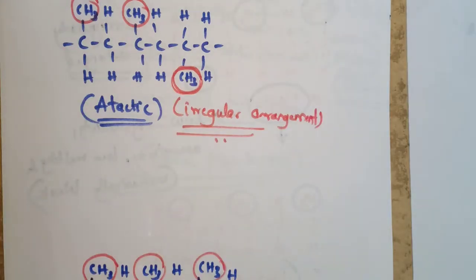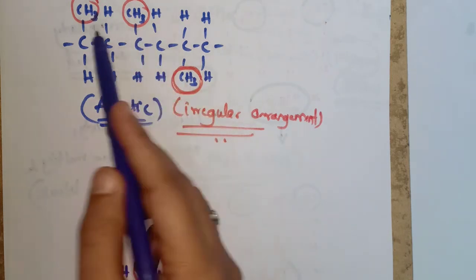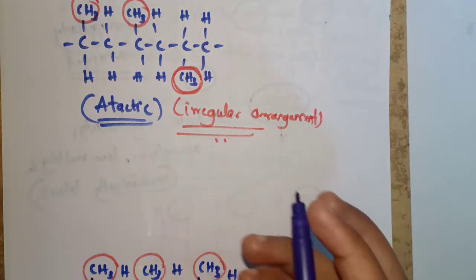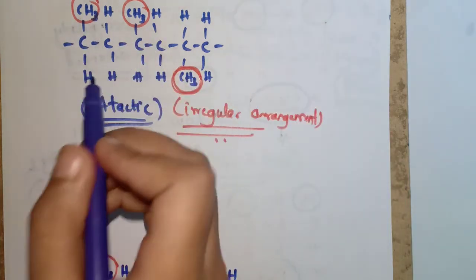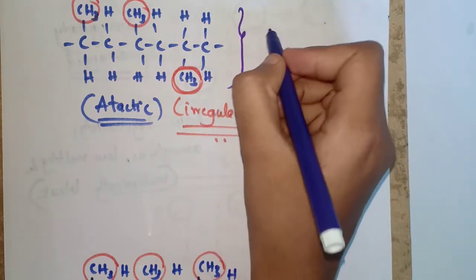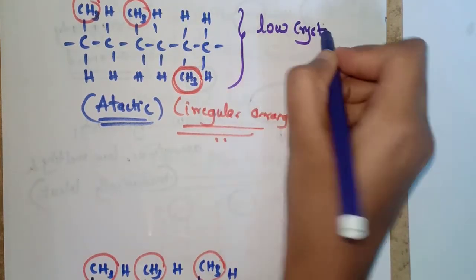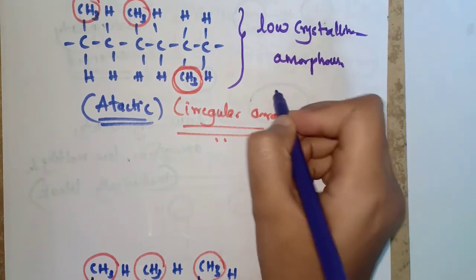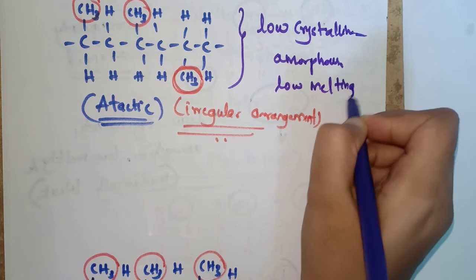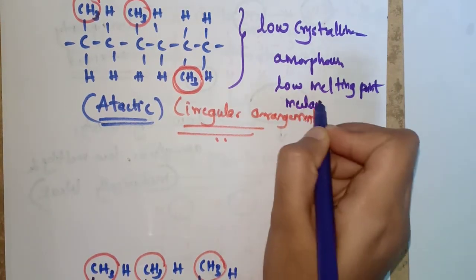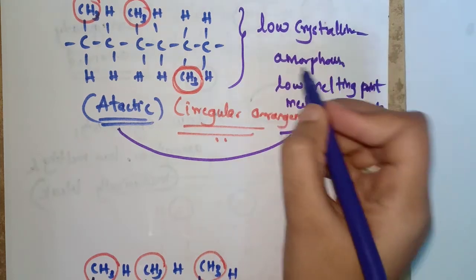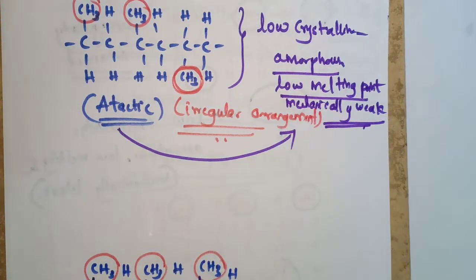Atactic polymer chains have irregularly oriented bulky side groups. Due to steric reasons these groups cannot lie in the same plane, so atactic polymers have low crystallinity, are amorphous, have a low melting point, and are mechanically weak.